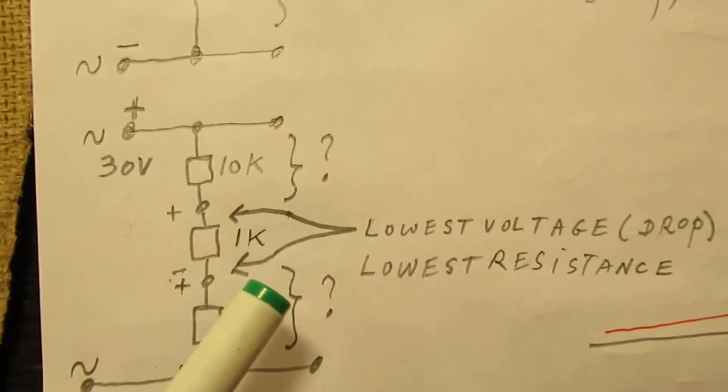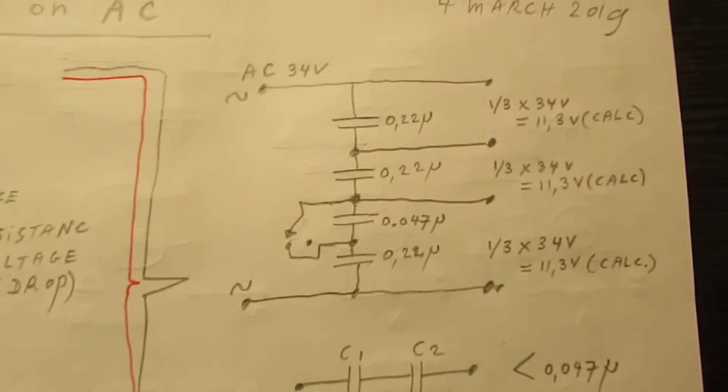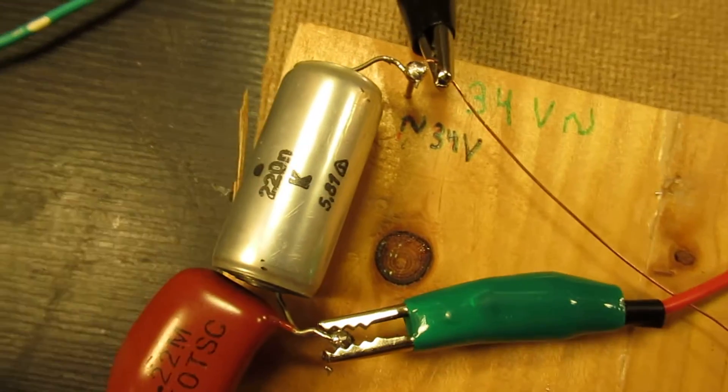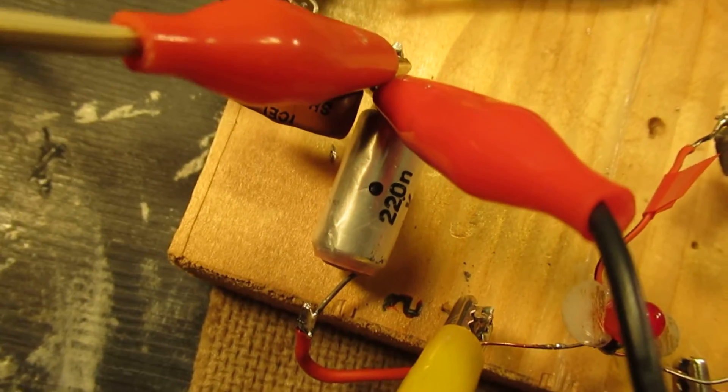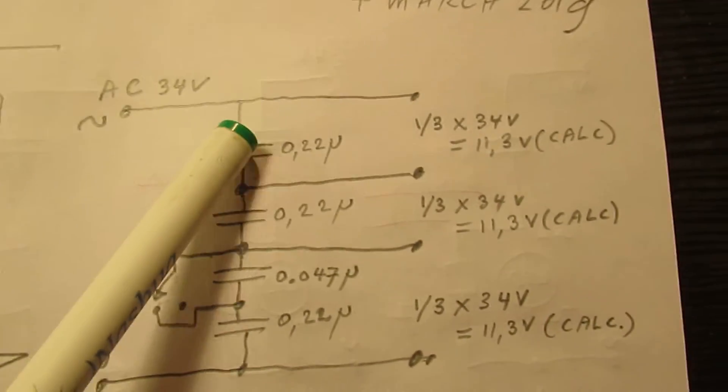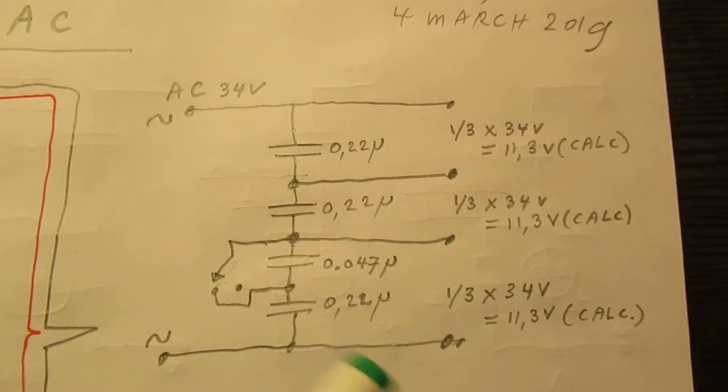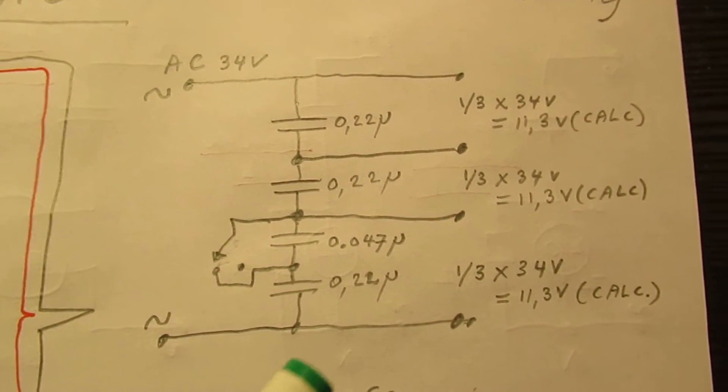When we try to make a voltage divider with a capacitor, we have the same situation. I've made here a voltage divider with three capacitors of 220 nanofarad in series, and in between I've switched another capacitor with a different value. Always use for such an experiment non-polar foil capacitors, never electrolytic, because electrolytic can and will explode on AC.